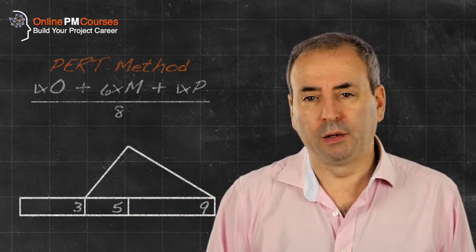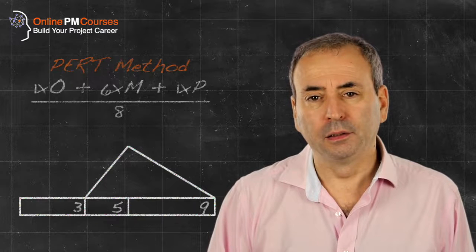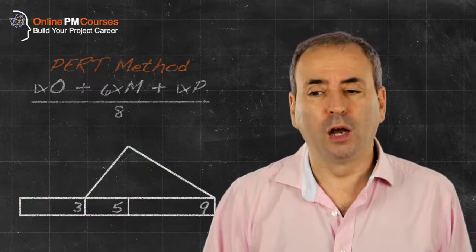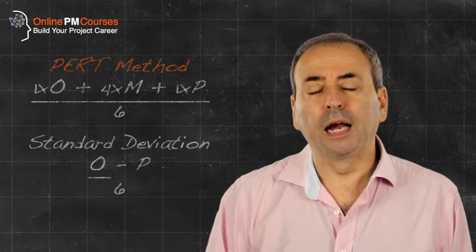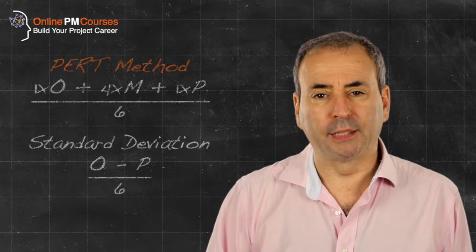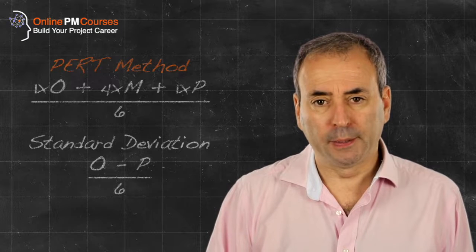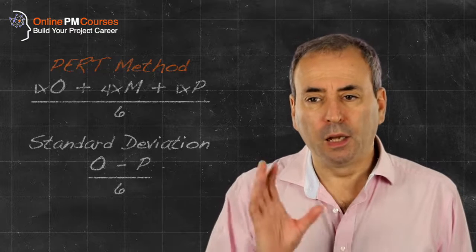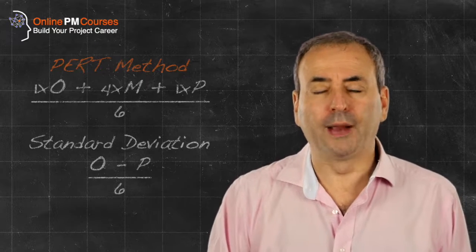We can also calculate the standard deviation to get some idea of the spread of likelihoods around our average. The way we calculate that is we subtract the optimistic estimate from the pessimistic estimate, then divide the answer by six. That gives us a plus or minus on our average.